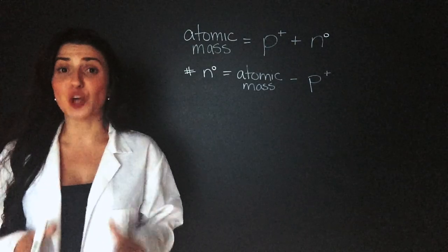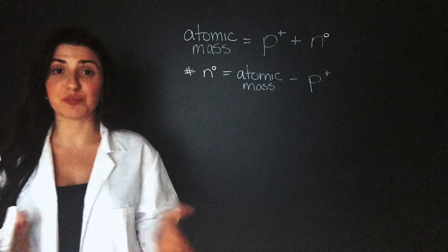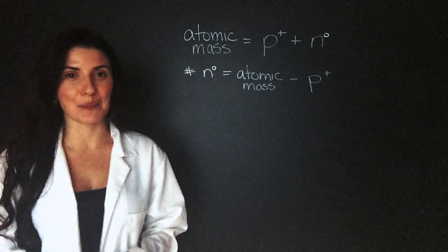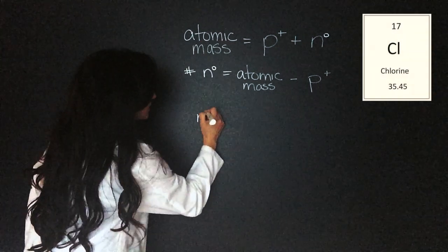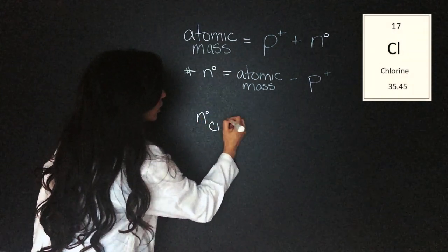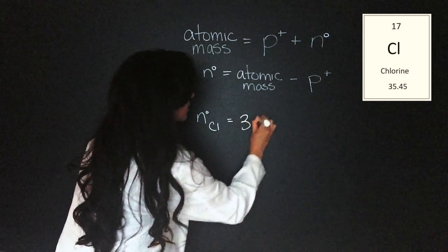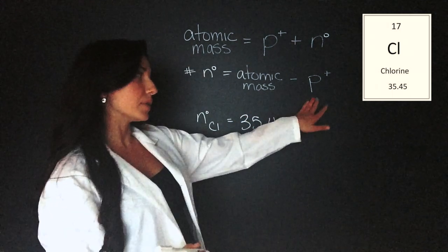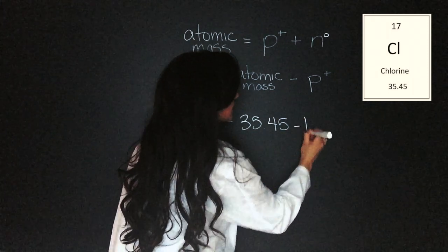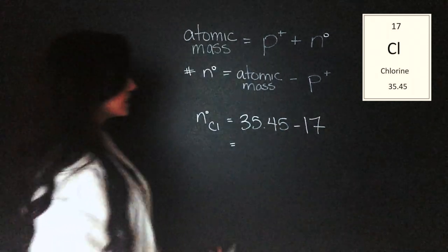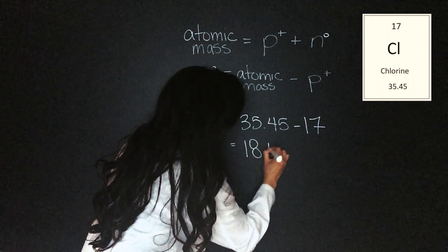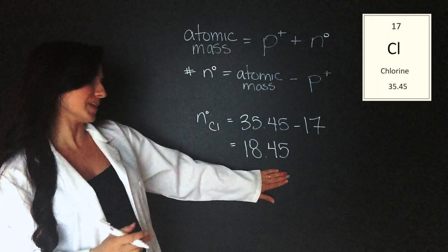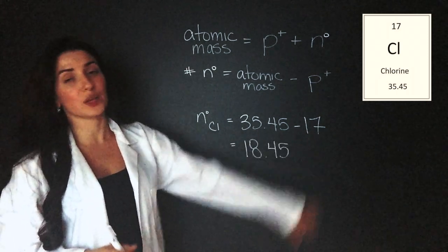Now, I don't want you to think that every single time the number of protons is going to equal the number of neutrons. Let's try a different example. The number of neutrons of chlorine. Chlorine has an atomic mass of 35.45 and the atomic number, which is the number of protons, is 17. That leaves us with 18.45 neutrons. Now, this is a perfect example where the neutrons do not equal the protons.